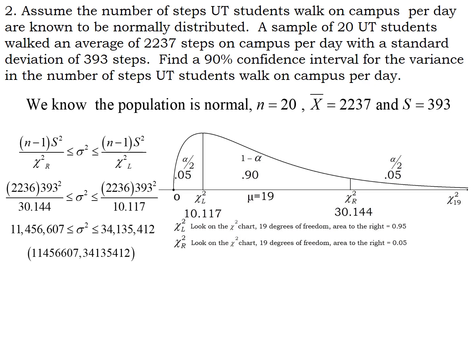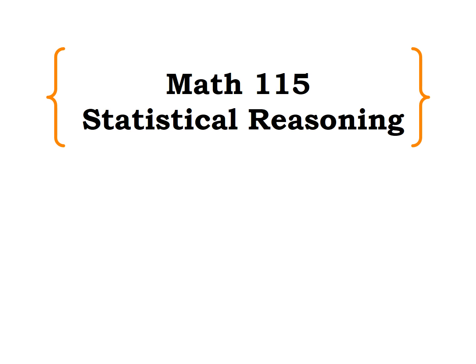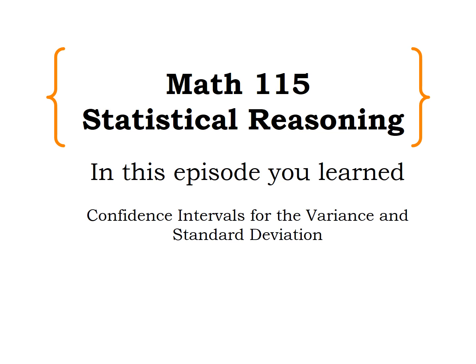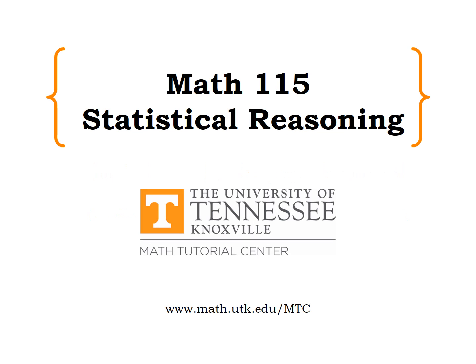That's the difference between a confidence interval for the variance and for the standard deviation. In Example 1, where we wanted the standard deviation, we had to take the square root. If you have any questions about the topics covered in this video or anything else in your statistical reasoning class, talk to your instructor, go to their office hours, or take advantage of the free tutoring available in the Math Tutorial Center. Good luck, and go Vols!